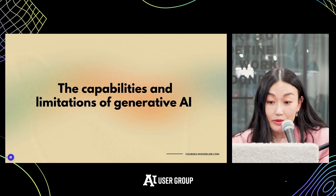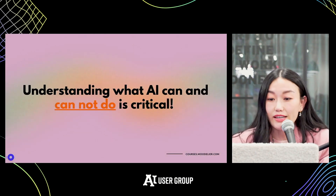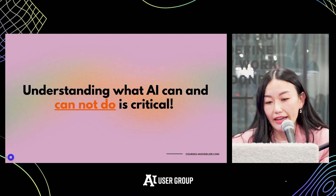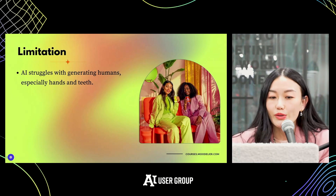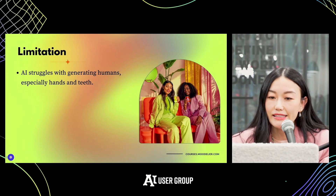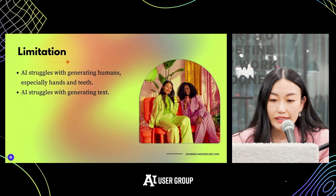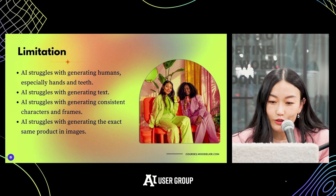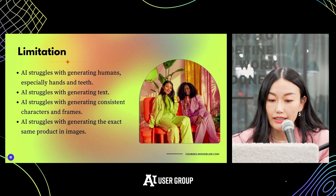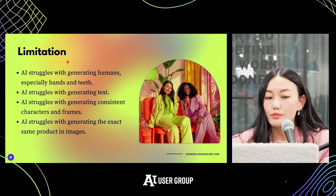Understanding what AI can and cannot do is critical, especially what it cannot do, because that determines your use cases. AI struggles with hands, teeth, and text. It also struggles with consistency of characters across frames, and with exactly recreating the same physical product in images. We'll talk more about that later.